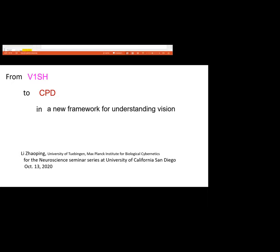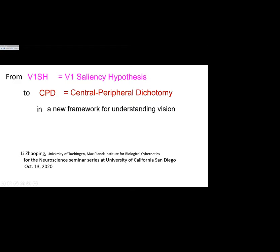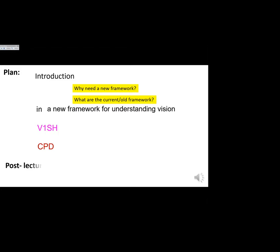The topic today is the excitement I've been having in the last 10 years or so. From WISH to CPD — WISH is the V1 Saliency Hypothesis, and CPD is Central Peripheral Dichotomy — this is a new framework for understanding vision. You may immediately ask why we need a new framework at all, and what is the old framework.